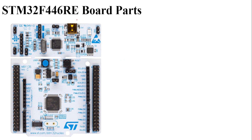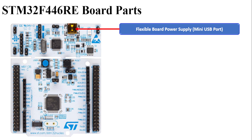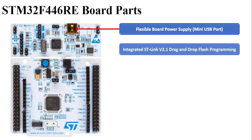Now let us briefly talk about the structure of this microcontroller board and what it provides. The first connector is the flexible board power supply mini USB port, which will be connected to your PC. This will be used to provide power, as well as to load programs through this USB port. Apart from that, you can also drag and drop your code into this board.